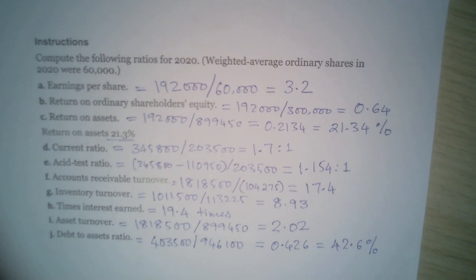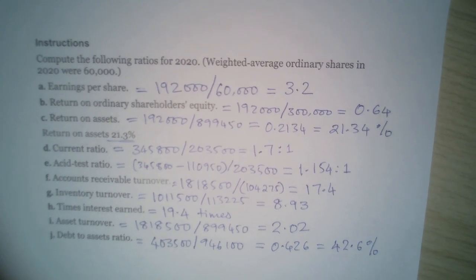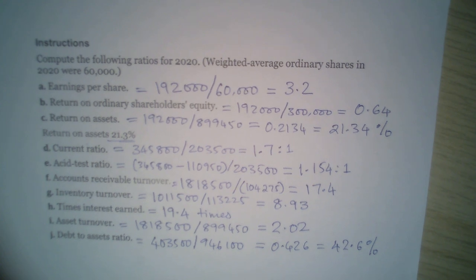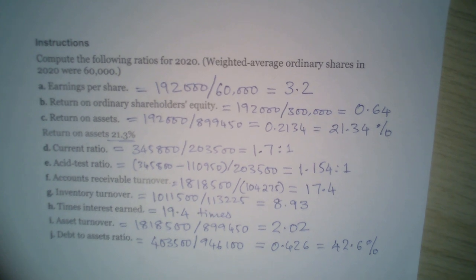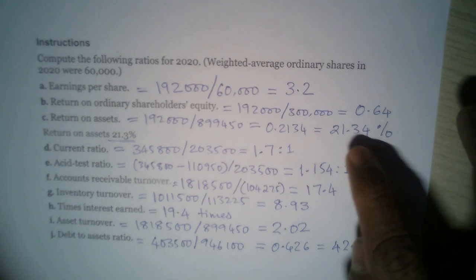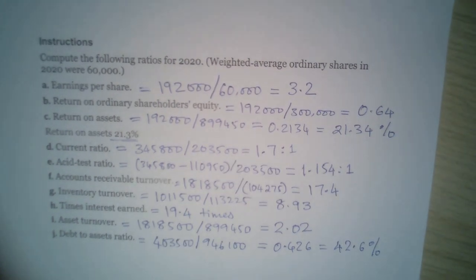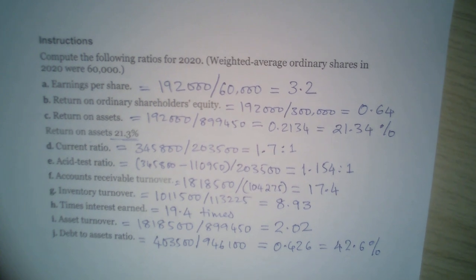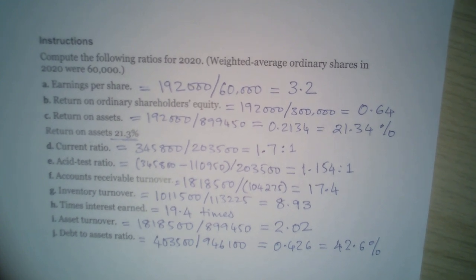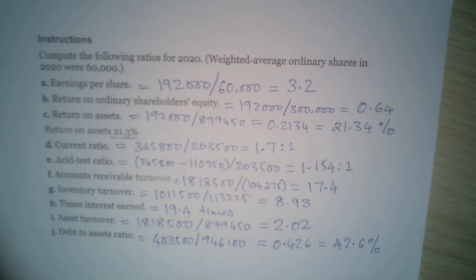So those are all the answers — earnings per share and the other ratios we calculated. The key takeaway is to have all the formulas handy. In exams, the deeper task is understanding what each ratio means — for example, what 21.34% return on assets implies — which requires more in-depth analysis. If you liked this video, please press the like button and share with your friends. Thank you.